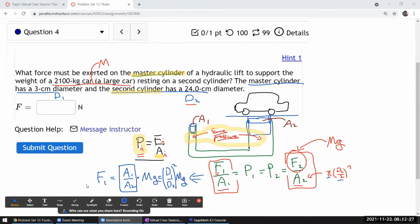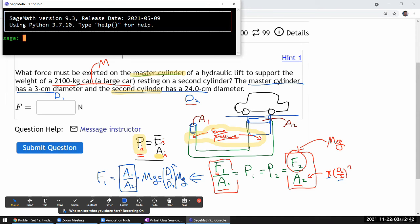Let me work out the number there: d1 over d2 squared times mg. I'll just plug in the numbers. So I'm going to plug in the diameters in both in centimeter, then the centimeter will cancel out—I won't have to worry about the units. So 24 divided by 3 squared times mass 2100 kilogram times g 9.8 meter per second squared.